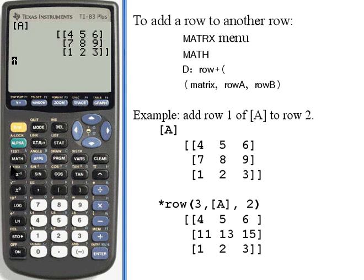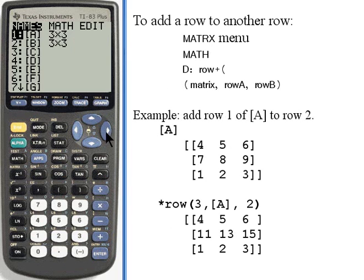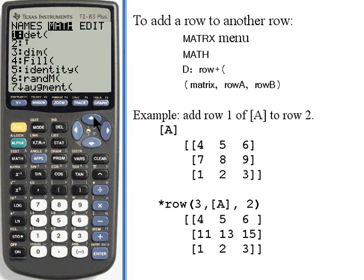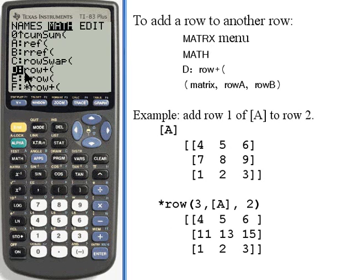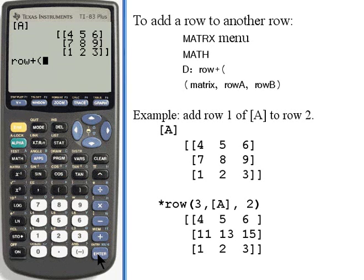Once again, to get to this operation, I have to go to the matrix menu, go over to math, press the up button, and what I want is item D, row plus. To add a row to another row, I have to tell the calculator the name of the matrix, the row I'm going to add, and the row I'm going to add to.